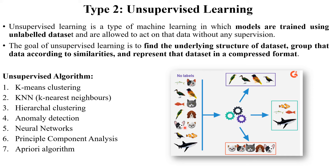We don't pass labeled data to the machine for training. For that purpose, we use different algorithms like k-means clustering, k-nearest neighbor algorithm, hierarchical clustering, anomaly detection, neural network, principal component analysis, and apriori algorithm. We will learn all those algorithms in the next session. The core concept is: pass unlabeled data to the machine, and the machine identifies and clusters or groups the images as per their characteristics.